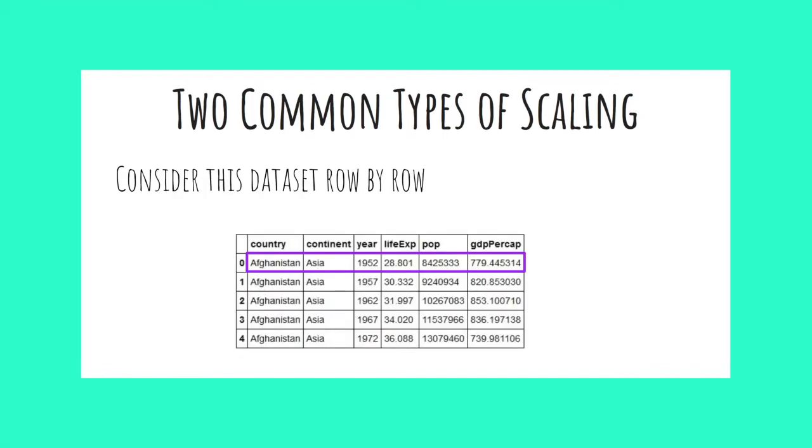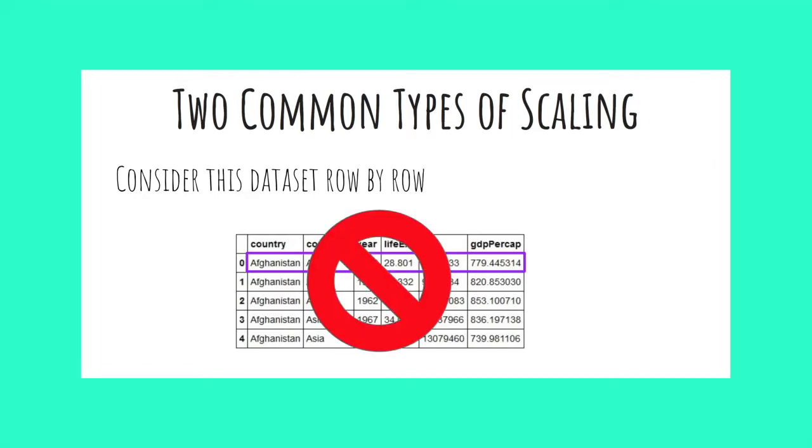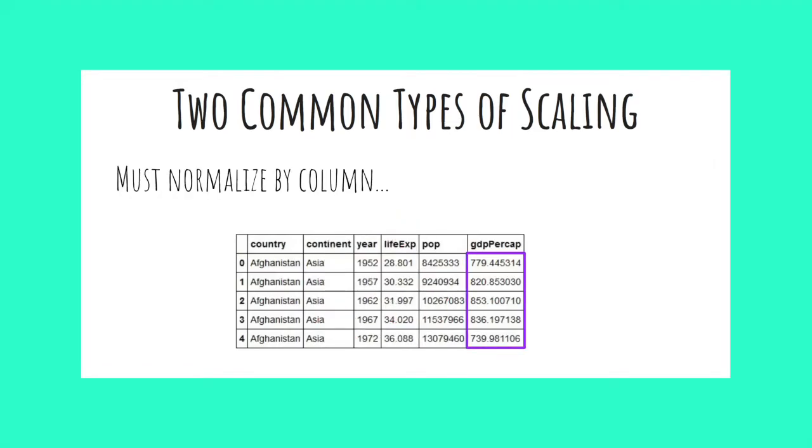This slide illustrates a data set and highlights the first row of data. You will never normalize across the horizontal axis. This doesn't make sense. What you will do is normalize each numeric column. We want to compare apples to apples. When creating our new scale, we have to create that scale for each column individually.